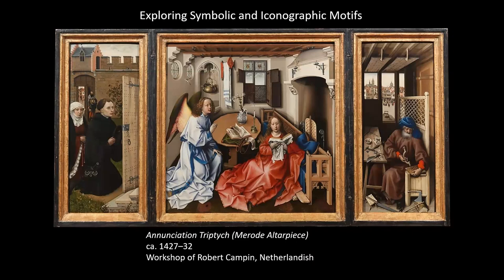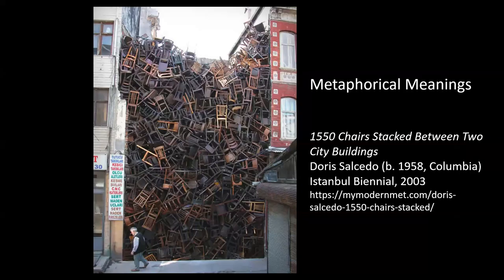Our textbook also mentions that winged creatures are prevalent in a number of different cultures. In this Judeo-Christian and Islamic context, winged creatures — angels and the like — represent beings who are closer to God than humans are. But in different cultures, winged beings can mean different things.